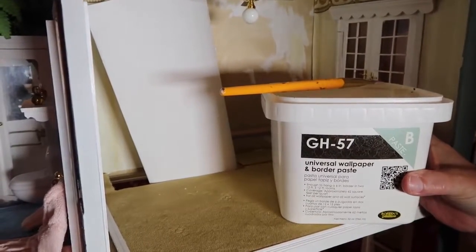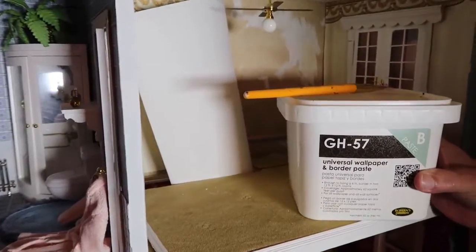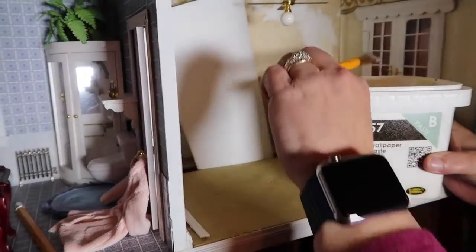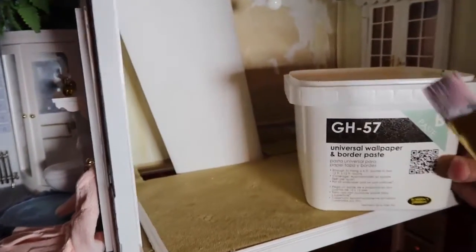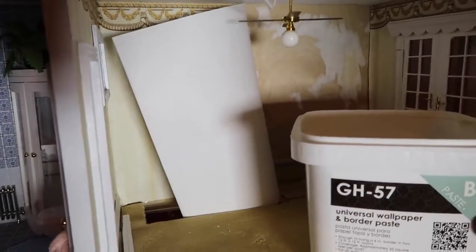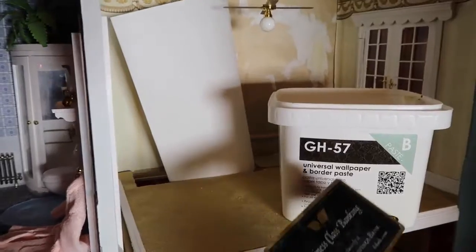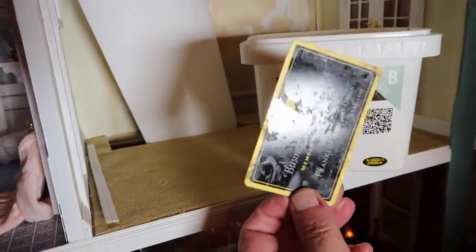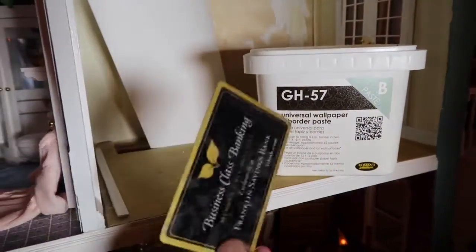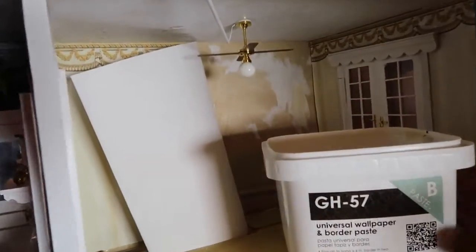So what we do is rather than put the wallpaper on the paper, we just paint it on the wall. And then we have a very trusty tool called an old credit card that will smooth the wallpaper out just fine. So I'm going to paint the paste on the back wall.